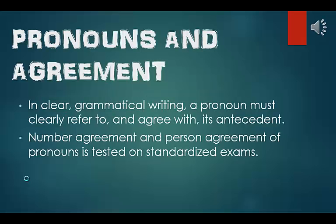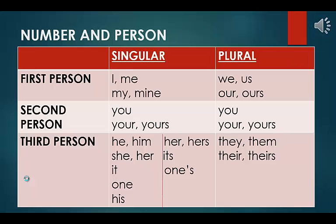Pronouns and agreement. In clear, grammatical writing, a pronoun must clearly refer to and agree with its antecedent. Number agreement and person agreement of pronouns is tested on standardized exams. In first person, the singular pronouns are I, me, my, and mine. The plural pronouns are we, us, our, and ours.